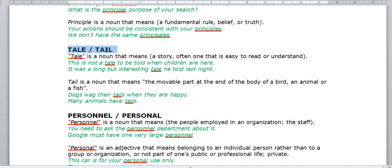A tale and tail. Tale is a noun that means a story, often one that is easy to read or understand. For example, this is not a tale to be told when the children are here. Or, it was a long but interesting tale he told last night. Tail is a noun that means the movable part at the end of the body of a bird or an animal or a fish. For example, dogs wag their tails when they are happy. Or, many animals have tails.